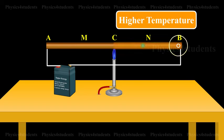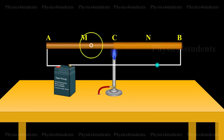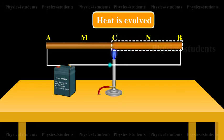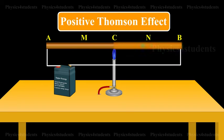Similarly, B will show higher temperature as compared to A. It means from A to C, heat is absorbed and from C to B, heat is evolved. This is known as Positive Thomson Effect.